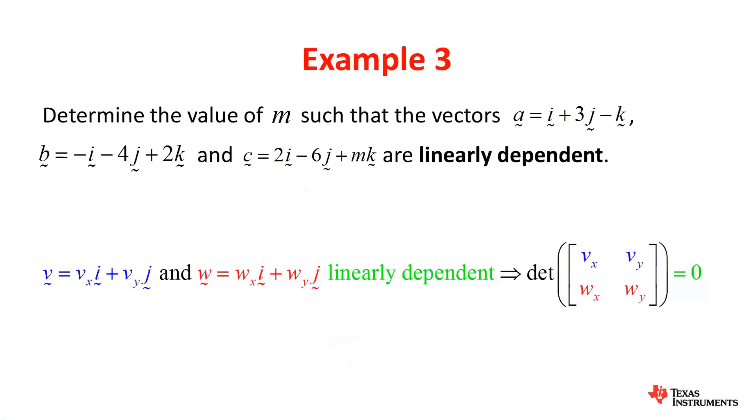So moving on to the final example. In this example, we'd like to determine the value of m such that the three vectors a=i+3j-k, b=-i-4j+2k, and c=2i-6j+mk are linearly dependent. Now, one very less known theorem is that in order for vectors to be linearly dependent, the determinant of the matrix containing their components would equal 0.